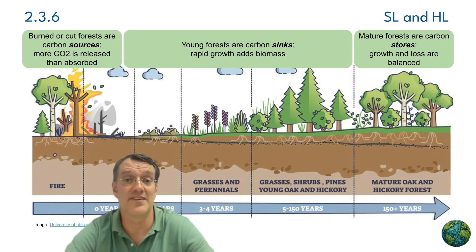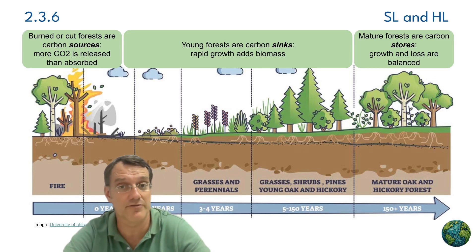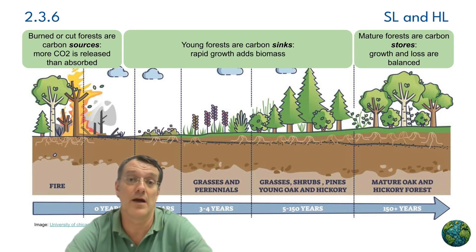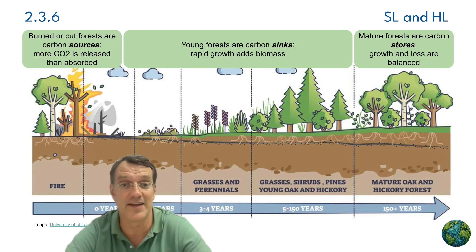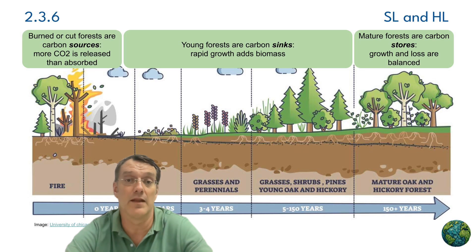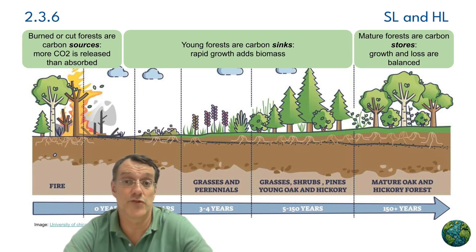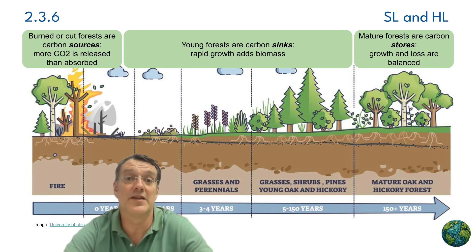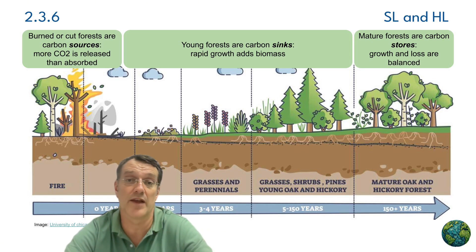Forest succession provides an excellent example of how these roles can shift over time. Young forests act as carbon sinks because they are growing rapidly and accumulating a lot of biomass. As forests mature, they become carbon stores when growth and loss reach an equilibrium. But when forests burn or are cut, they transform into carbon sources, releasing more carbon dioxide than they absorb.